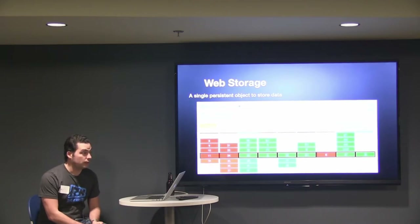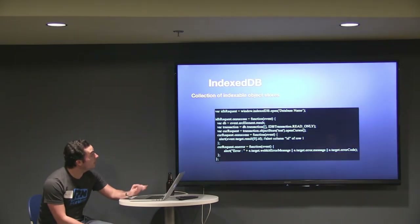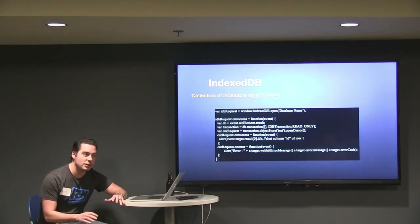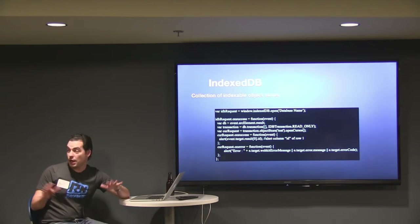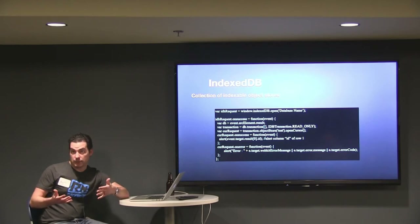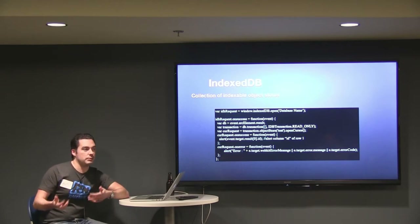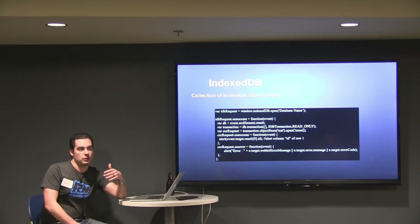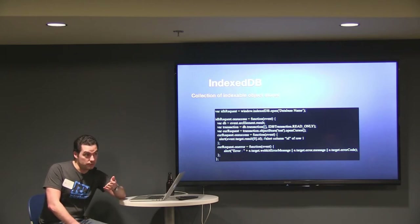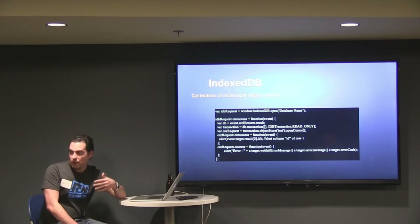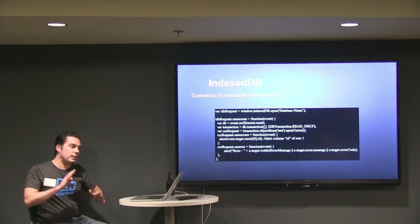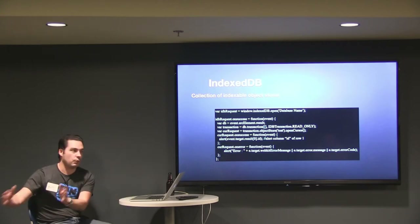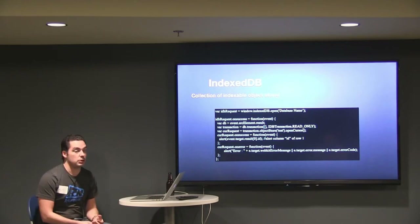Everybody's pretty hot and heavy on IndexedDB. IndexedDB is a collection of indexable object stores — no columns, no anything — basically key-value pairs where every value is a JavaScript object. You put JSON objects into these object stores and you can create indexes on any value in those objects. You can do ordered indexes, unique indexes, required indexes. It's supposed to be the happy medium between local storage and WebSQL, a little bit simpler, trying to get rid of some of the issues with WebSQL.